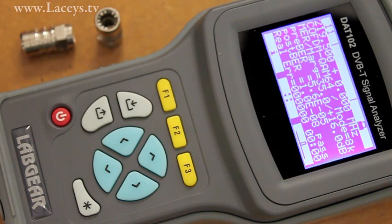What do the DAT 102 MER BER and constellation measurements really mean? As the concepts may be new to some, perhaps a few words of explanation may assist.